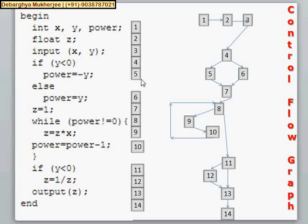And if maybe this if is true or maybe false, we will come to this statement that is z equals to 1. This is labeled as 7. Then we are starting one while loop. While power not equals to 0. This is labeled as 8.